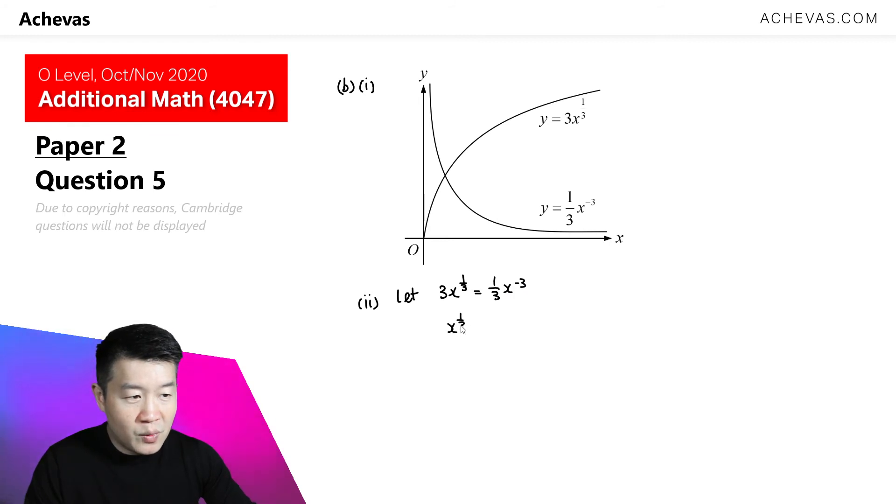So we have x to the power of 1 over 3 equals, if I were to divide this across the other side, 1 over 9, and this is 1 over x to the power of 3. So multiplying this now across the other side, we have x to the power of 1 over 3 times x to the power of 3. This equals 1 over 9. It will be x to the power of 1 third plus 3, which is going to be 10 over 3. This equals 1 over 9.